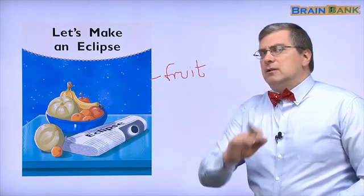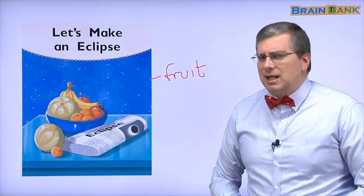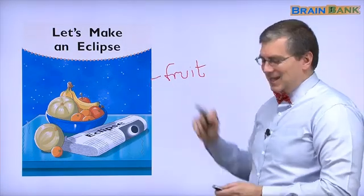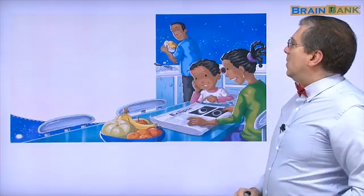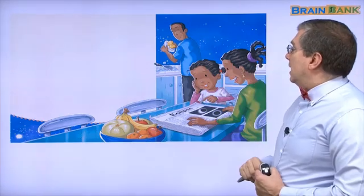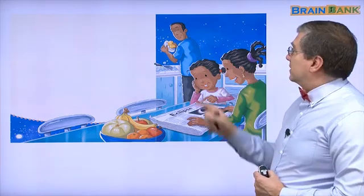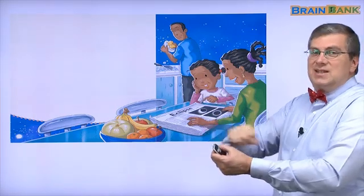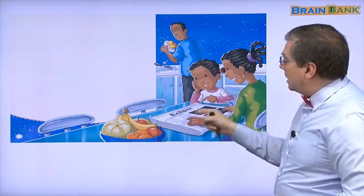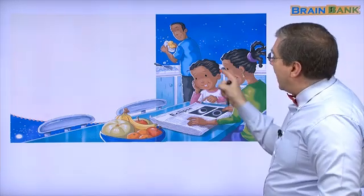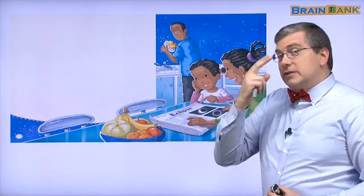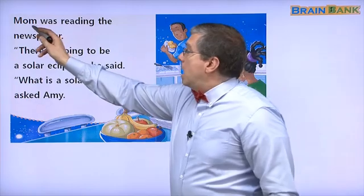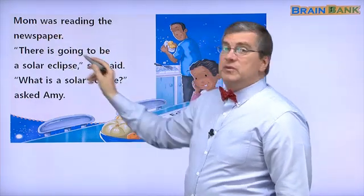재미있어요. Don't eat it. 먹지 마세요. Right? Don't eat it — use it to make an eclipse. What do we see here? It's 아침에, right? They just finished breakfast. Dad is washing the dishes. Mom has a newspaper. And the little girl is looking at the newspaper.